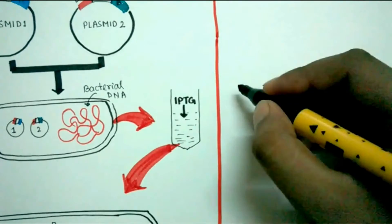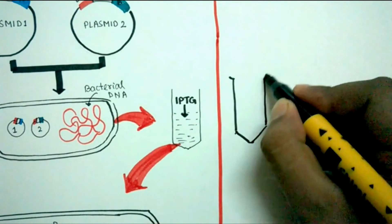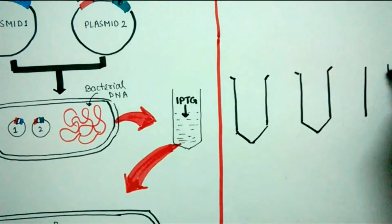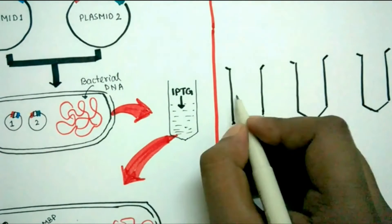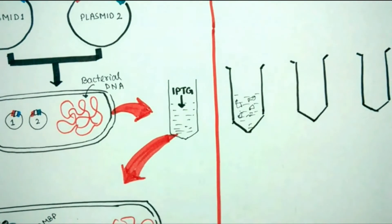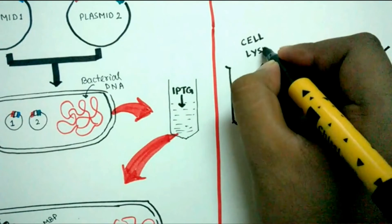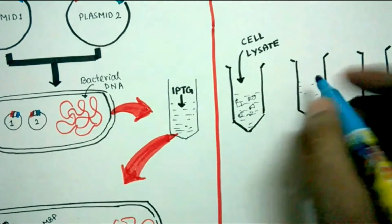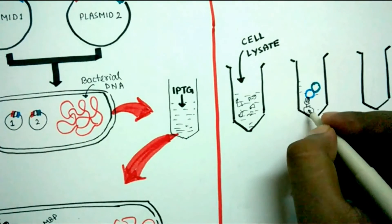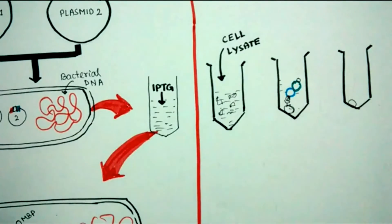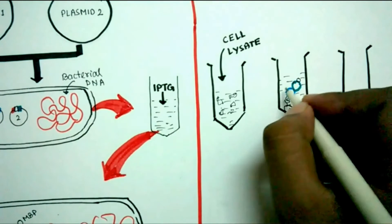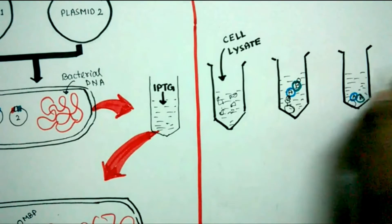To detect whether A and B are physically interacting with each other, we have to lyse the cells and take the cell lysate. In the first test tube we add the cell lysate, then we add GSH coated beads. GSH is glutathione which directly binds to GST.